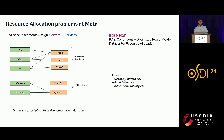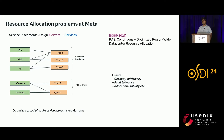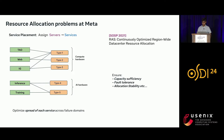Moving up the stack, the next problem we encounter is service placement. The goal is to assign servers to services. Typically, services request a specific amount and type of server, and we want to map those requirements to ensure services get the demand they need, while respecting fault tolerance, allocation stability, and optimizing for their spread.